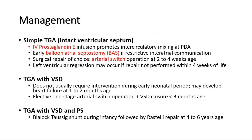For management, it depends on the type of TGA. If there is an intact ventricular septum, an IV prostaglandin E infusion will promote intercirculatory mixing at the patent ductus arteriosus. Early balloon atrial septostomy can also be done, or the surgical repair of choice would be an arterial switch operation when the baby is around 2–4 weeks old.